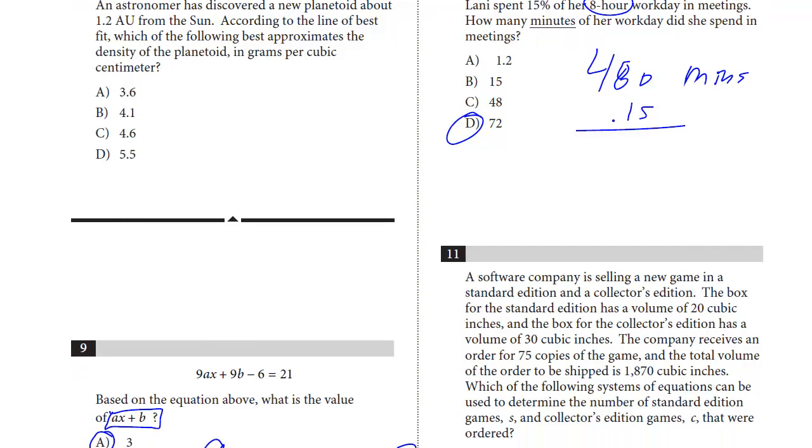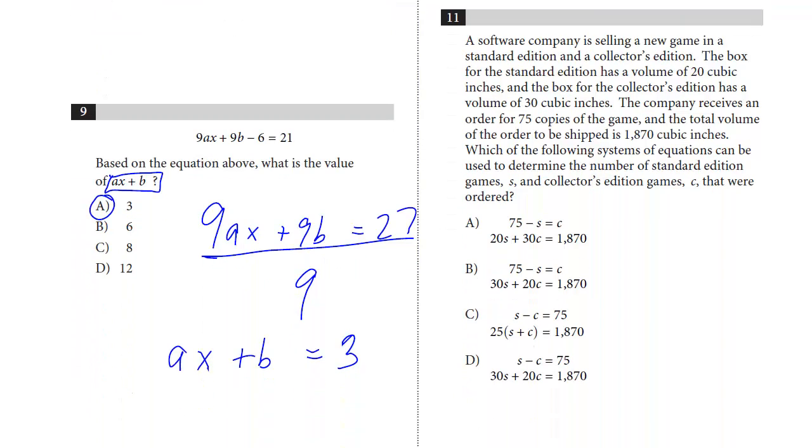And we have the last question on this page, number 11. A software company is selling a new game in a standard edition and collector's edition. The box for the standard edition has a volume of 20 cubic inches. The box for the collector's edition has a volume of 30 cubic inches. The company receives an order for 75 copies of the game.